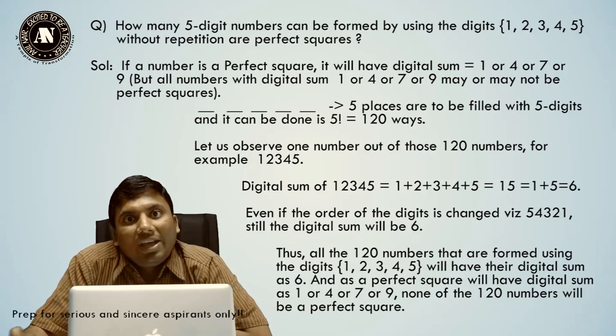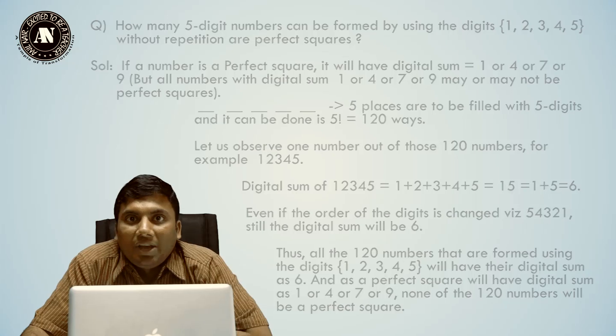The answer is zero. If it is a perfect square it should have digital sum 1, 4, 7, or 9. I hope you enjoyed this logic. Keep watching Anil Nair Classes YouTube channel.